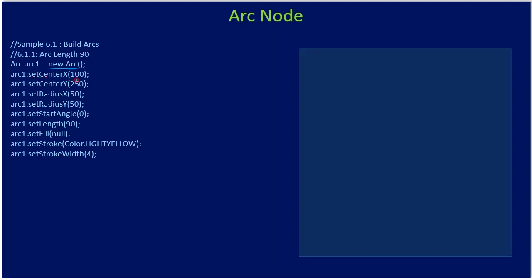To draw an arc we need to construct a node of type Arc. We set the center of the arc just like how we set the center for a circle. After that we set X radius and Y radius, then we specify the start angle as 0 and the end angle as 90. These are all the parameters for drawing an arc.